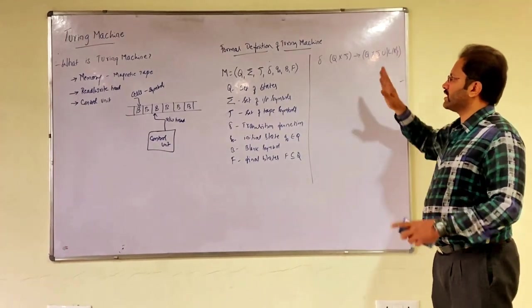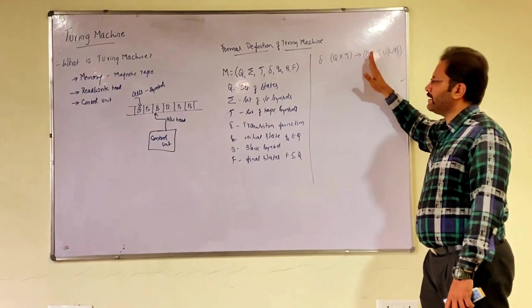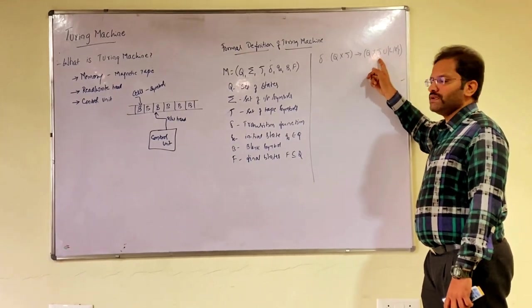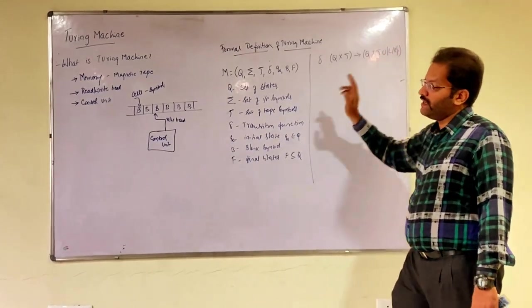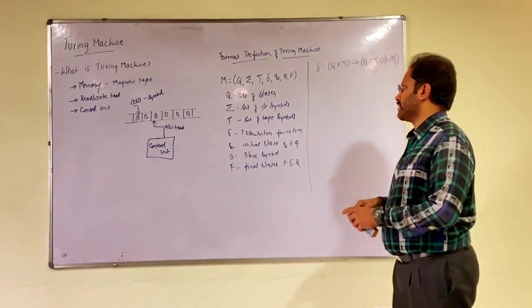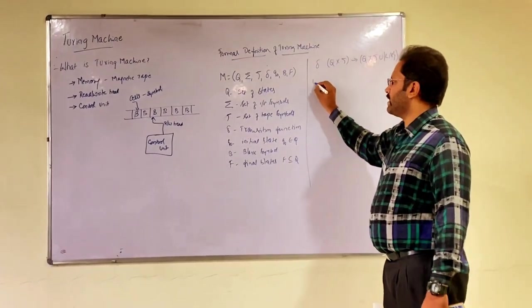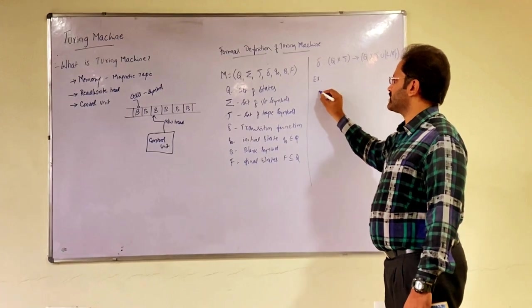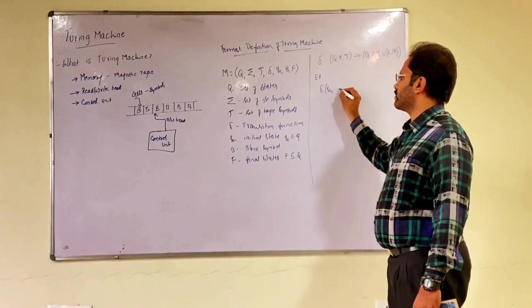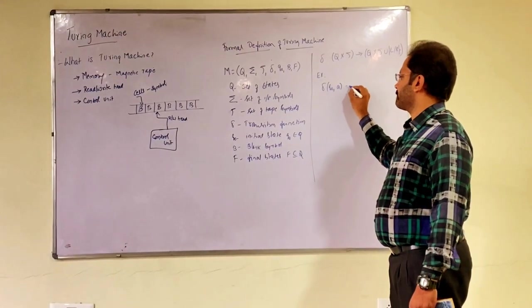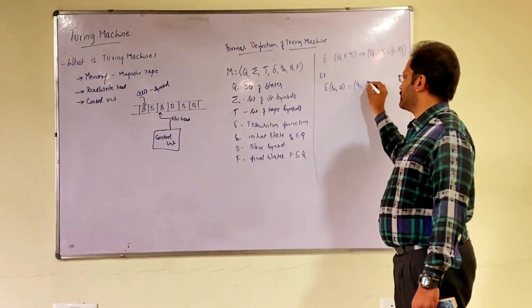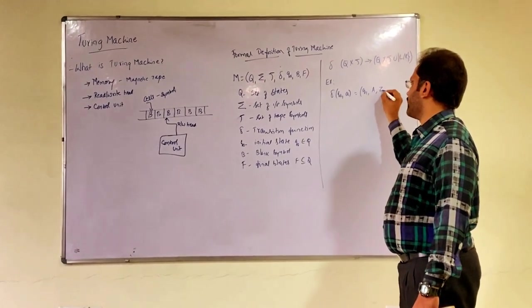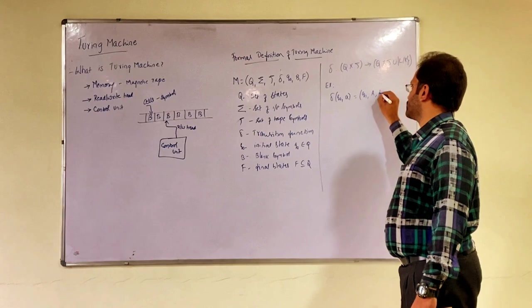Let me take a simple example and understand. It says, suppose if it says in the state Q0 if the input symbol is A, then I say change the state to Q1, replace A by uppercase A and move towards left.